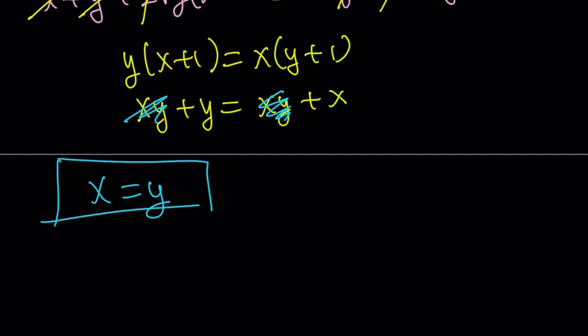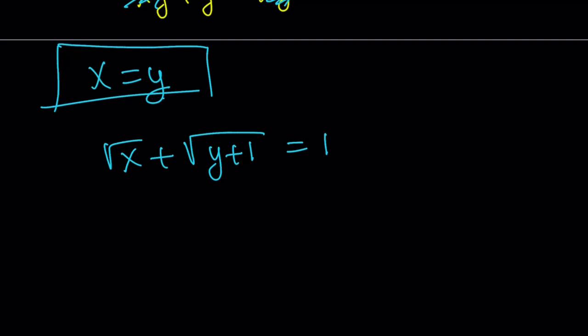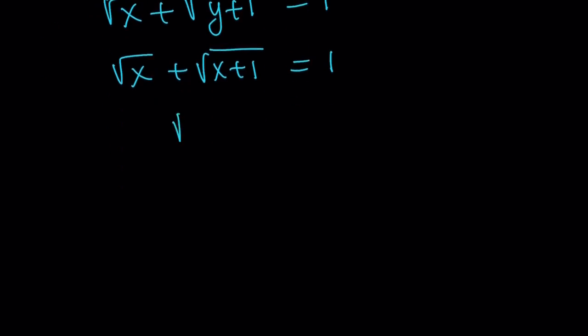So x equals y can be substituted into one of the original equations — I'll use the first one. Rewriting: square root of x plus the square root of y plus 1 equals 1. Replacing y with x gives square root of x plus the square root of x plus 1 equals 1. Squaring both sides gives x plus (x+1) plus 2 times the square root of x squared plus x equals 1.